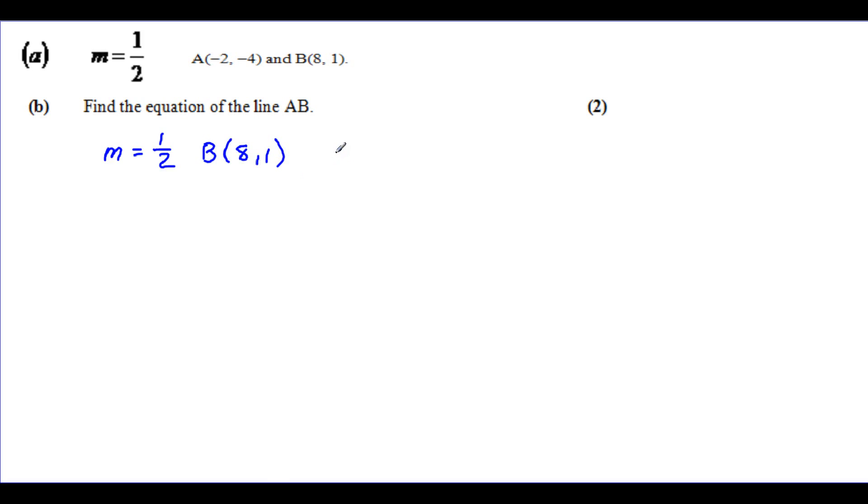So if B is the point 8, 1, I'm going to say that the A value here is 8, and the B value is 1. And the reason for those lettering namings is that I'm going to use the Y minus B equals M bracket X minus A formula.